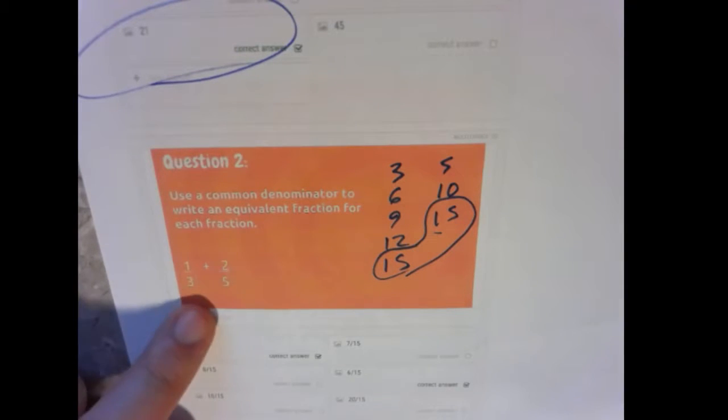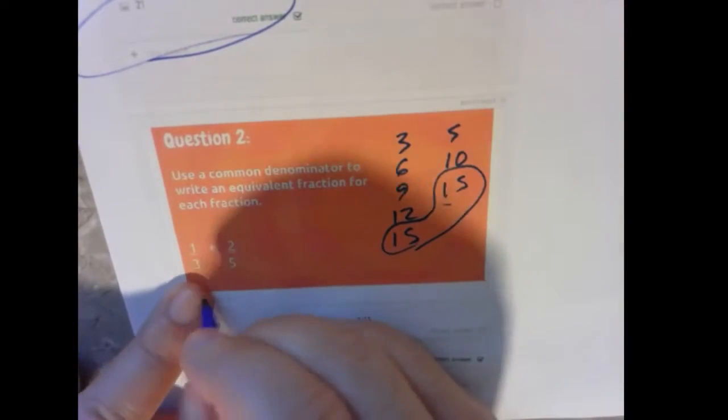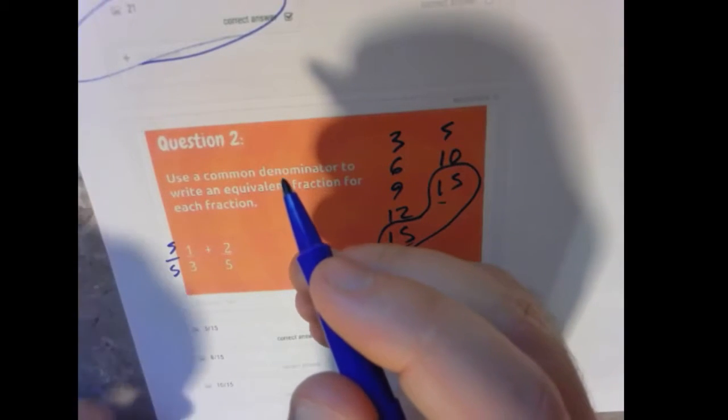But we need to rewrite these fractions. Instead of 1/3, it's going to be something over 15. So how do I go from 3 to 15? I would multiply that by 5. You have to do the same to the bottom and the top. So we have 5 over 15.